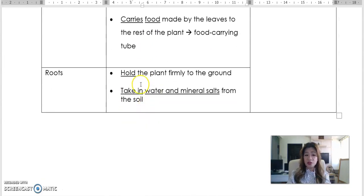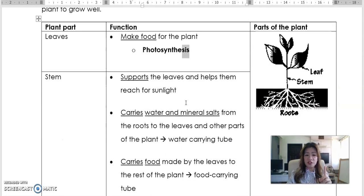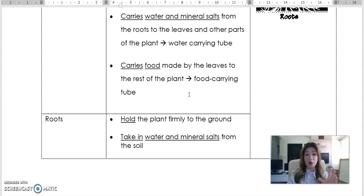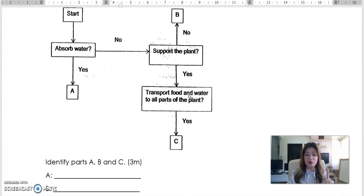And what does the roots do? The roots hold the plant firmly to the ground so that they don't topple, so that they can absorb water and mineral salts from the soil. So these are the functions of these three parts. All you need to know is these three parts for P3 science and you will be able to go on answering questions in section B. So remember these keywords now. Let's go on to section B. Let's take a look at some example questions.